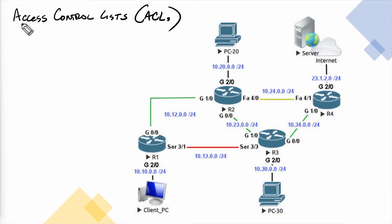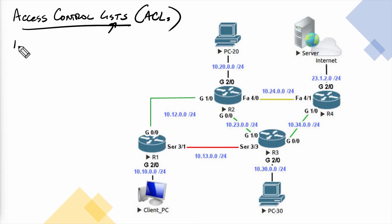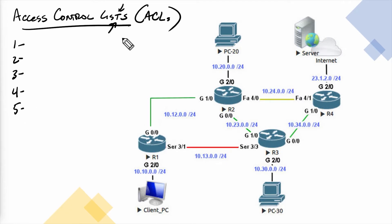Regarding our discussion of access control lists, let me give you a quick example. An access control list — the first part of it is a list. Like a grocery list when you're going to the store and you have a list of things to get. In Cisco, an access control list is a list of permit statements or deny statements.